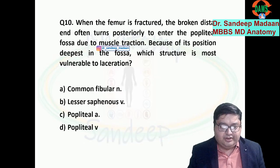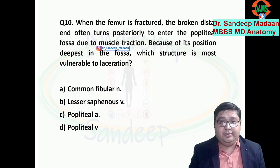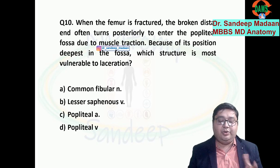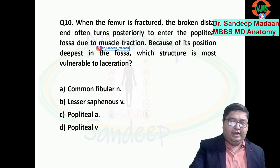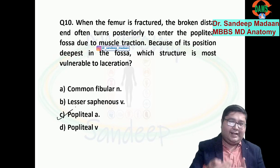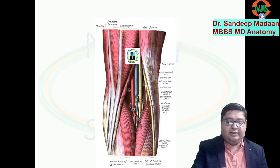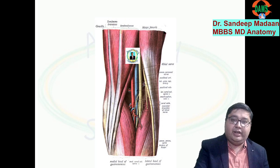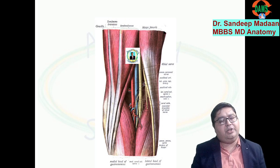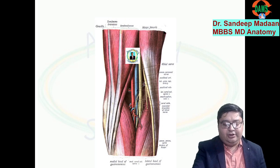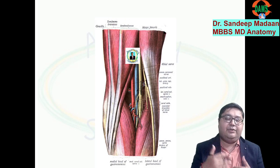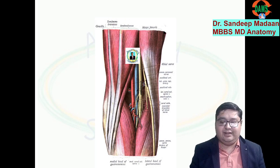Next question: the femur is fractured. The broken end will enter the popliteal fossa. Who is at highest risk of injury because of its deepest position? That is the popliteal artery, because the popliteal artery is just next to the bone. This picture gives clear orientation: artery is deepest towards the bone, just superficial to it is the vein, and further superficial is the nerve. The sciatic nerve divides here into two branches — tibial and common peroneal. Common peroneal winds around the neck of fibula and further divides into superficial and deep peroneal nerve.